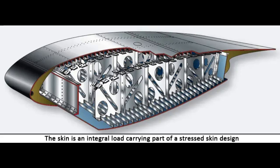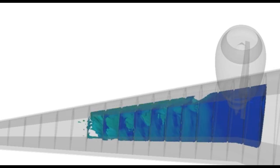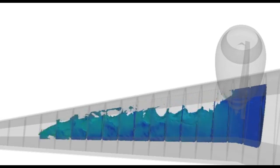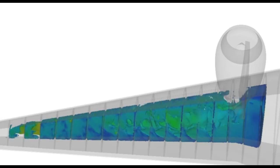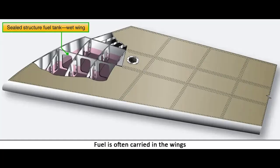Often the skin on a wing is designed to carry part of the flight and ground loads in combination with the spars and ribs. This is known as a stressed skin design. The all-metal full cantilever wing section shows one such design where the lack of extra internal or external bracing requires that the skin share some of the load; the skin is stiffened to aid with this function. Fuel is often carried inside the wings of a stressed skin aircraft. The joints in the wing can be sealed with a special fuel-resistant sealant, enabling fuel to be stored directly inside the structure. This is known as wet wing design.